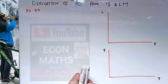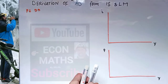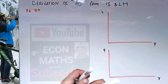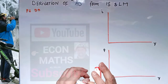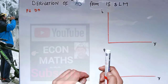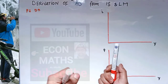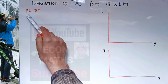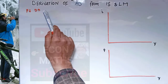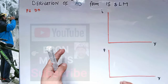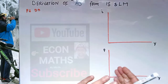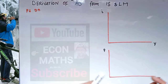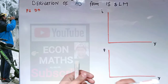In this video we will learn how to derive the aggregate demand curve from the IS and LM curves. The aggregate demand curve is derived on the basic law of demand: when price decreases, demand will increase and vice versa, other things remaining constant — what we call the ceteris paribus variables.